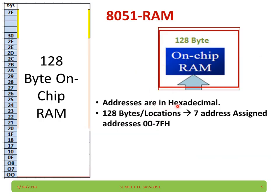Addresses are used in hexadecimal as all of us know. For 128-byte locations, 7 address lines are needed, and addresses from 00H to 7FH are assigned for 128 bytes. So I have taken 128-byte RAM with addresses starting from 00H, 01H, 02H up to 7FH.